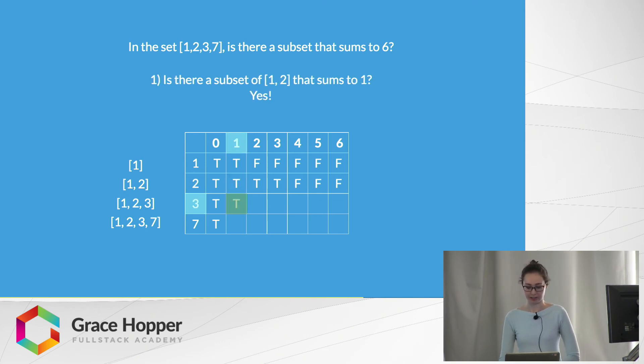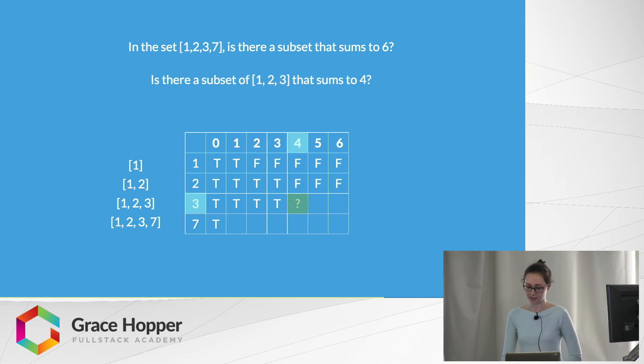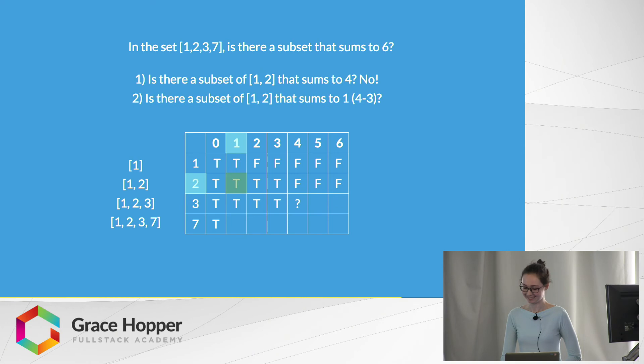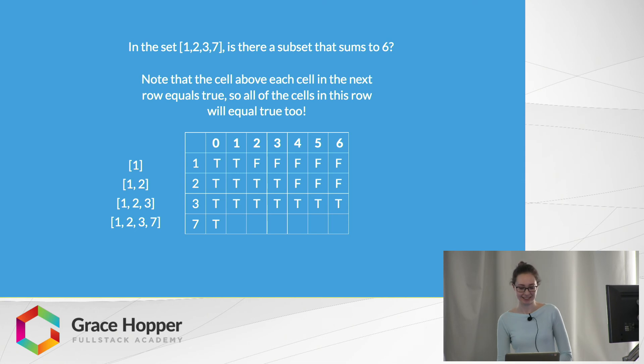Then we can continue doing the same thing for the next row. As you can see for the last couple of cells, it was true above all of them, so therefore it's going to be true in these cells. And then we'll continue. You can see by the squares that I'm asking the same questions repeatedly. Then you may notice that the cell above every cell in the next row equals true. So all the cells in this row will equal true too. Yay.